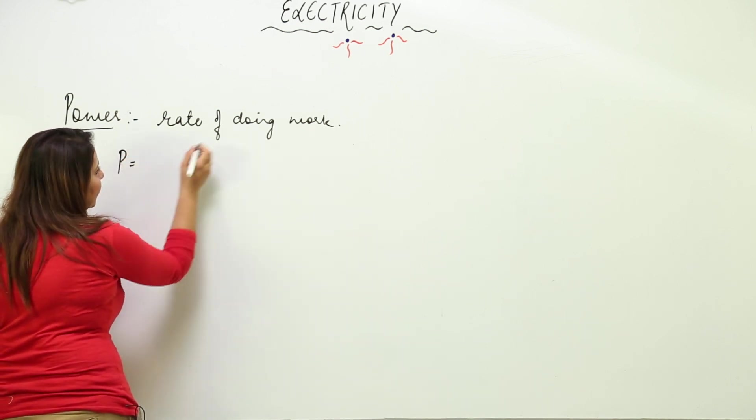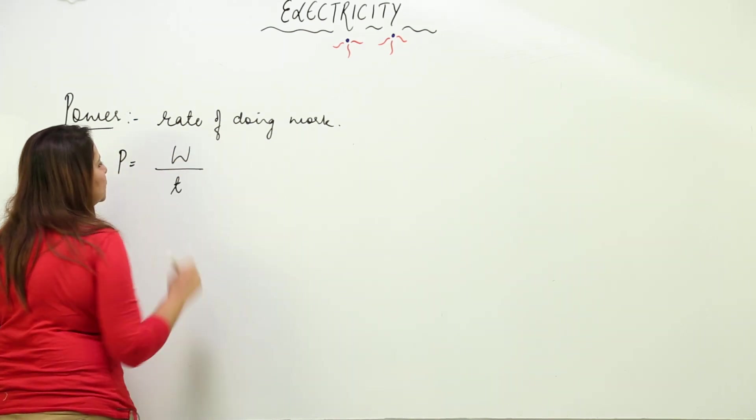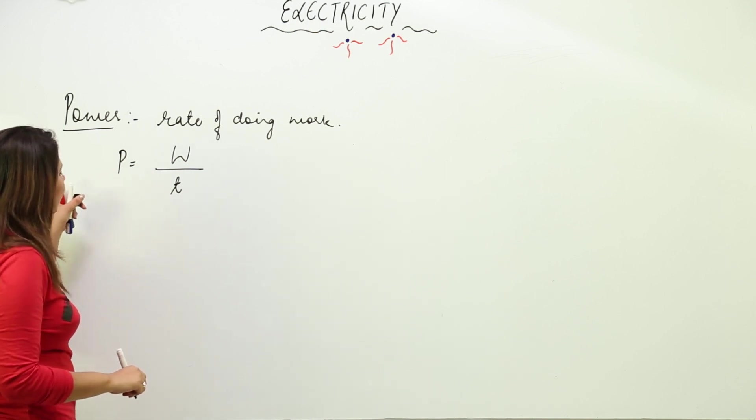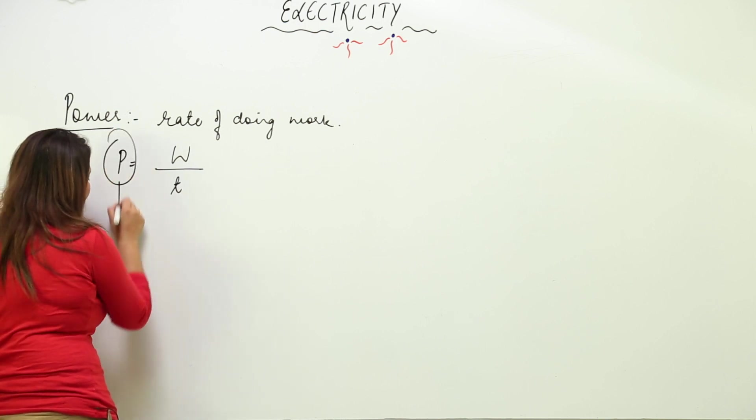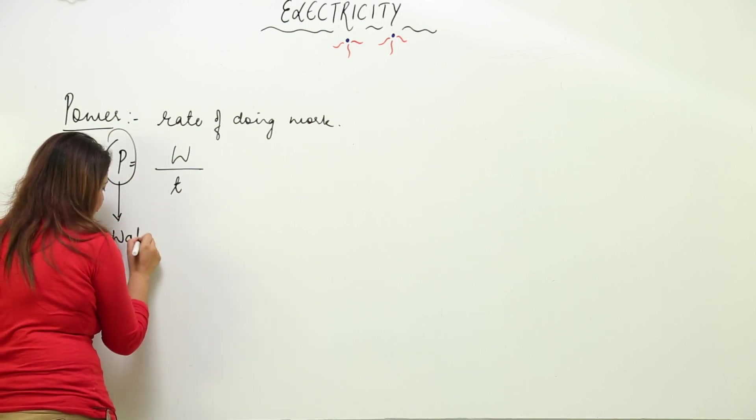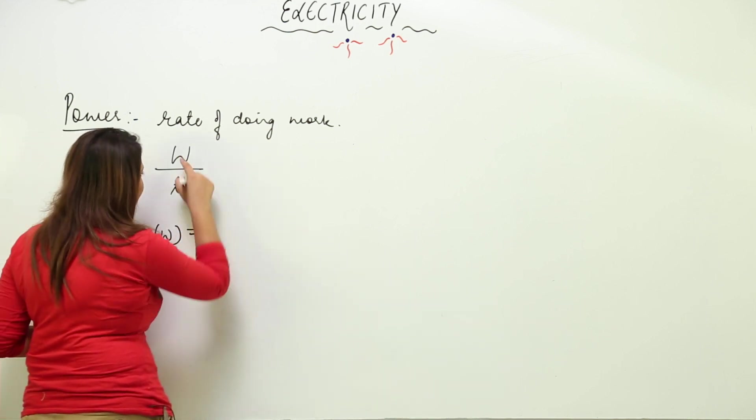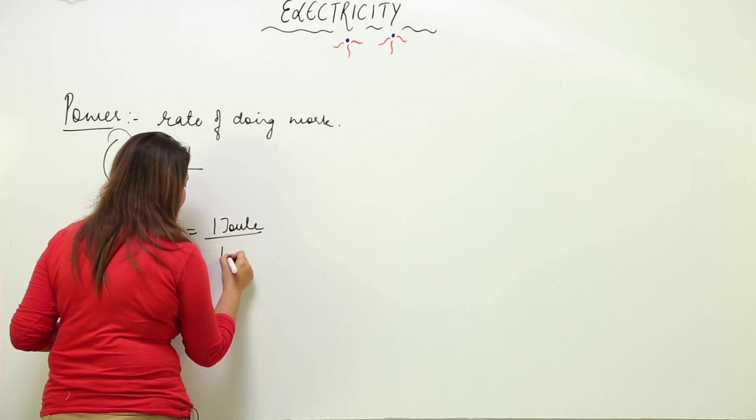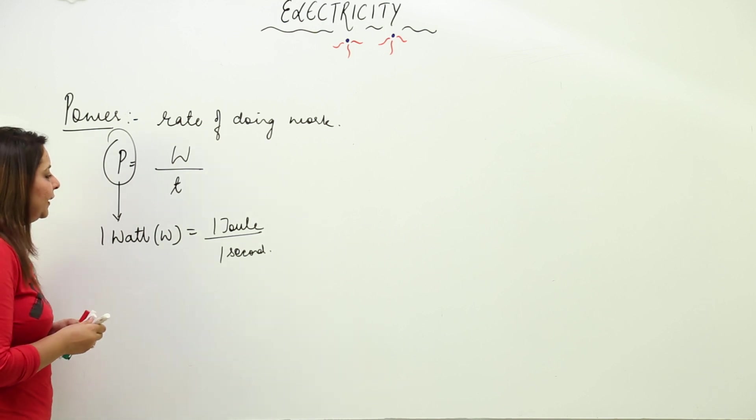If we write a formula for it, power equals work upon time (P = W/t). The SI unit of power is watt, denoted by W. 1 watt equals 1 joule over 1 second, so 1 W = 1 J/s.